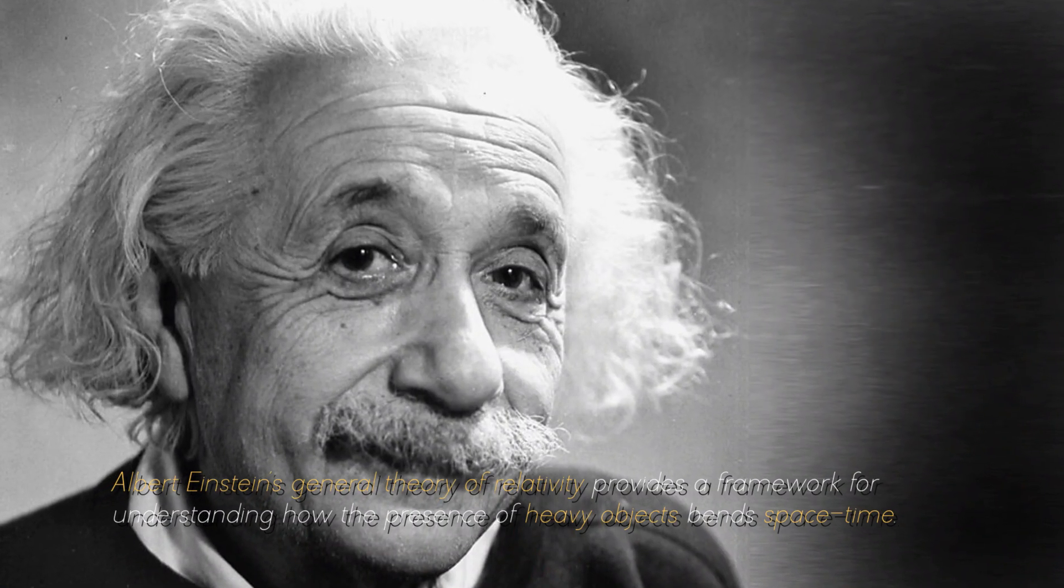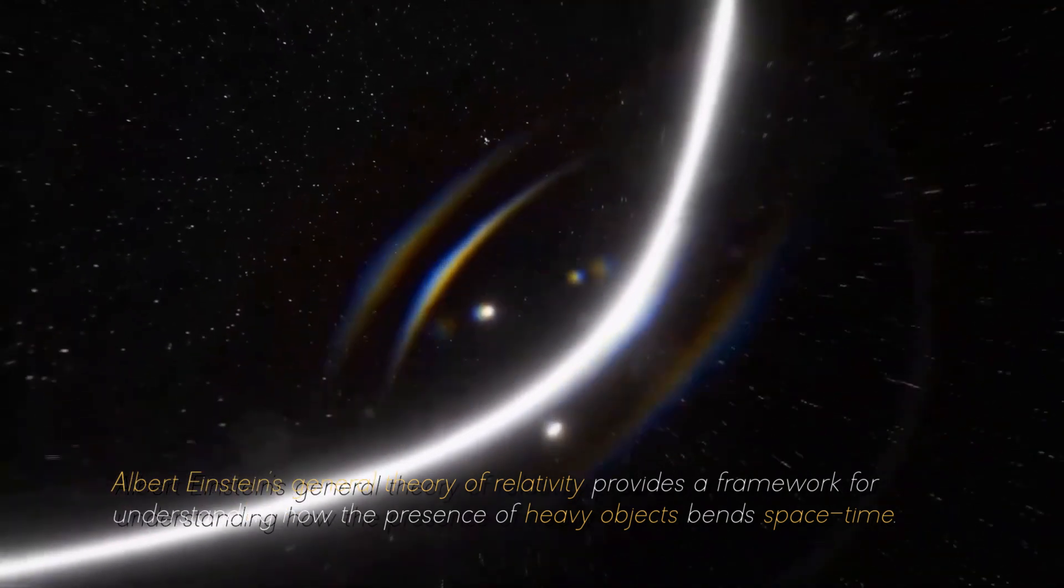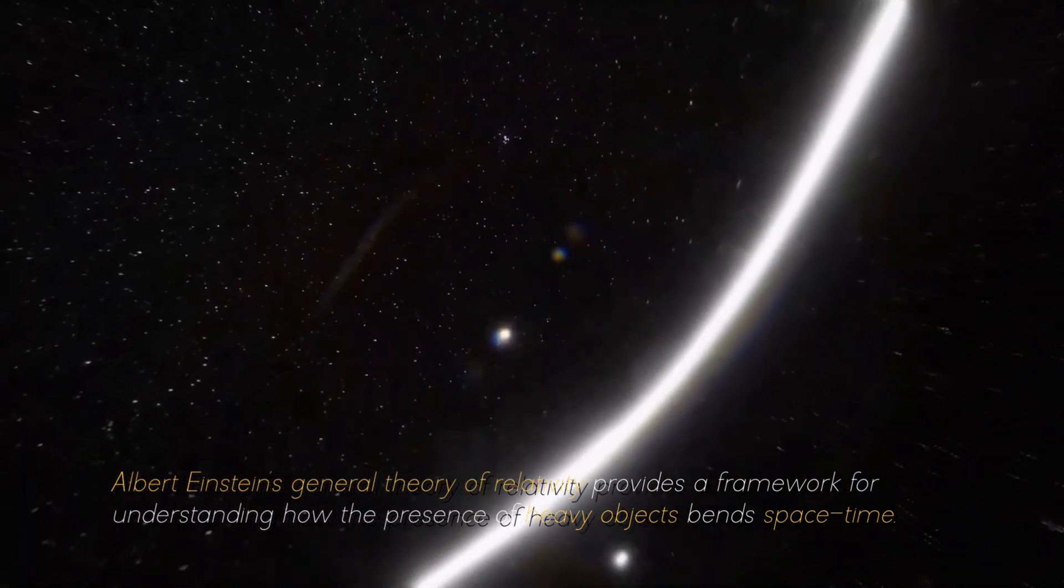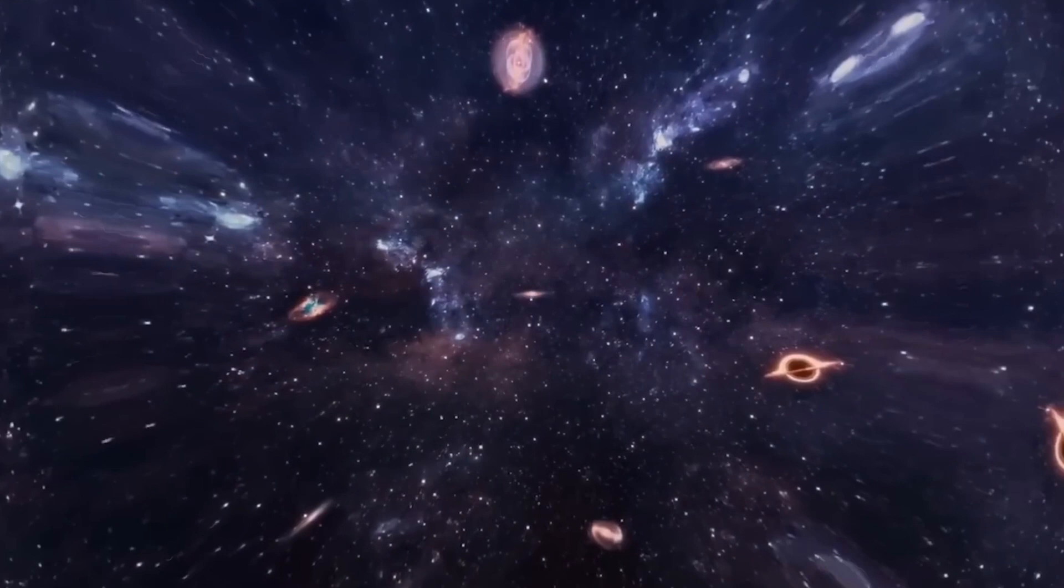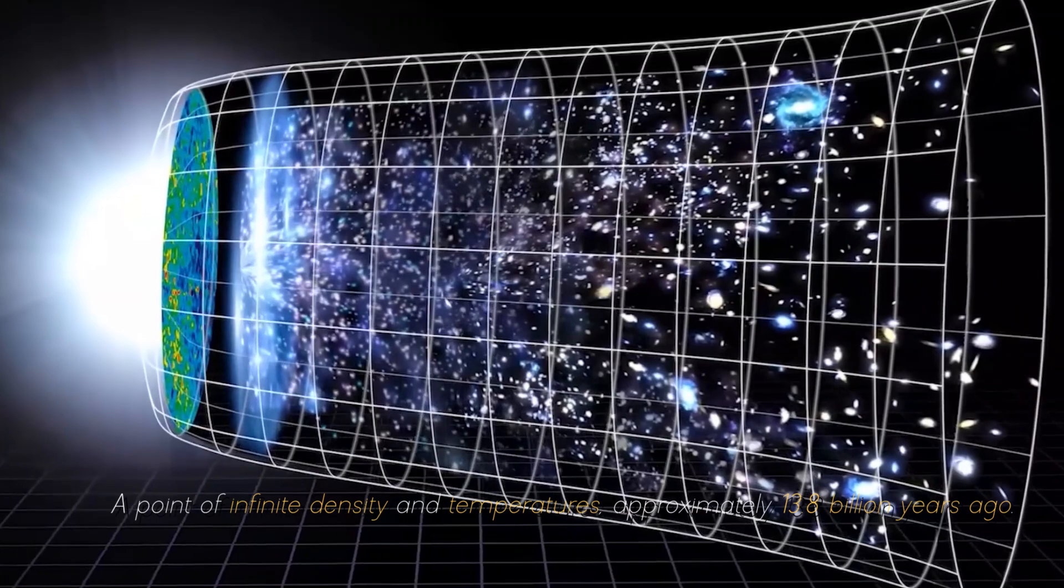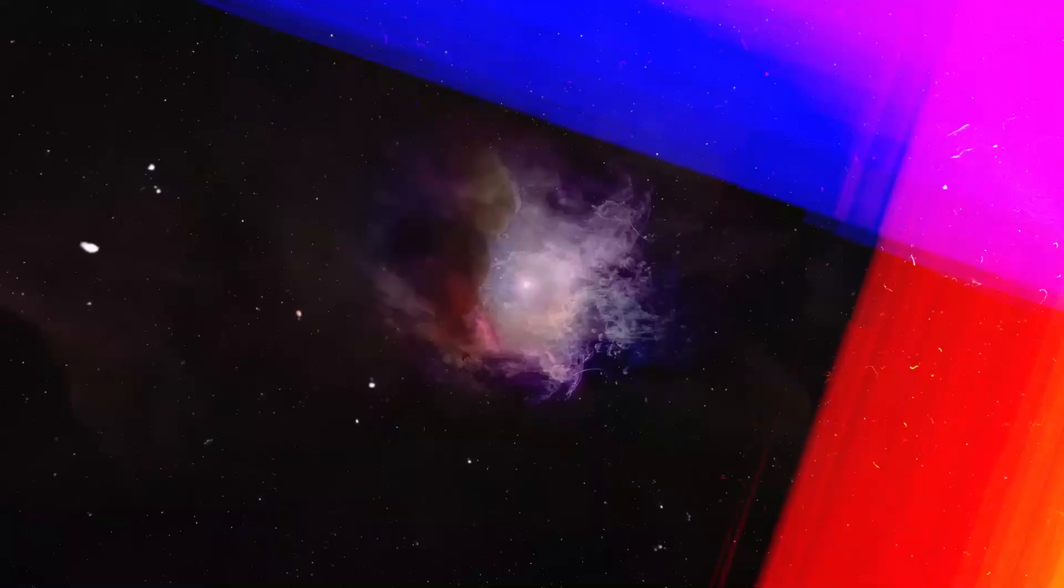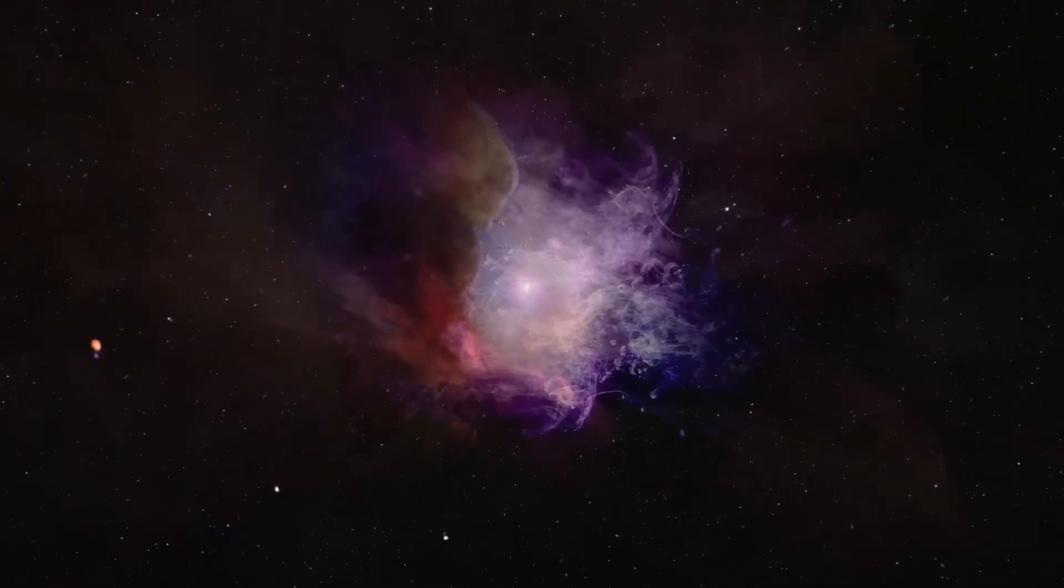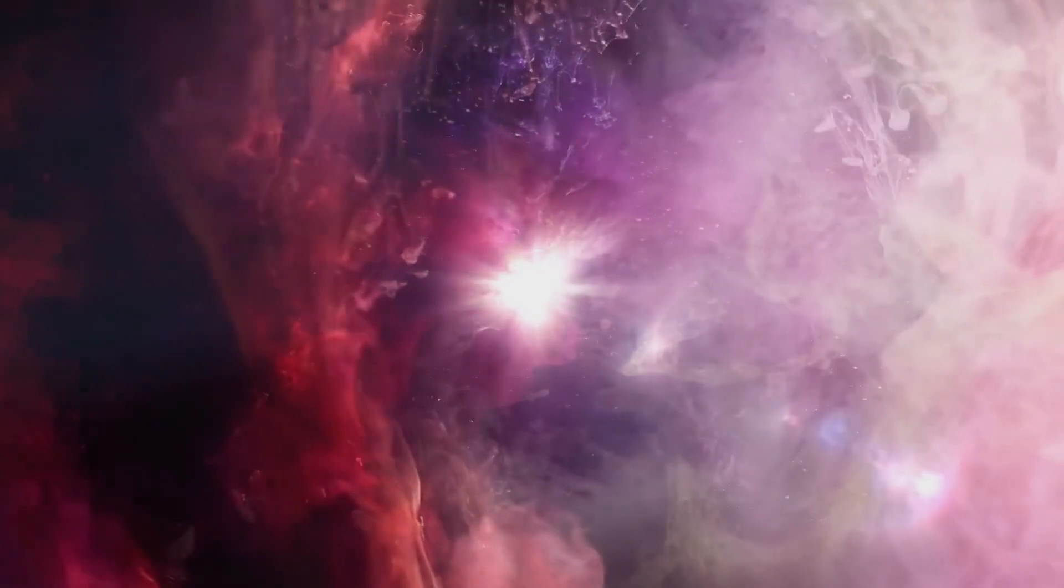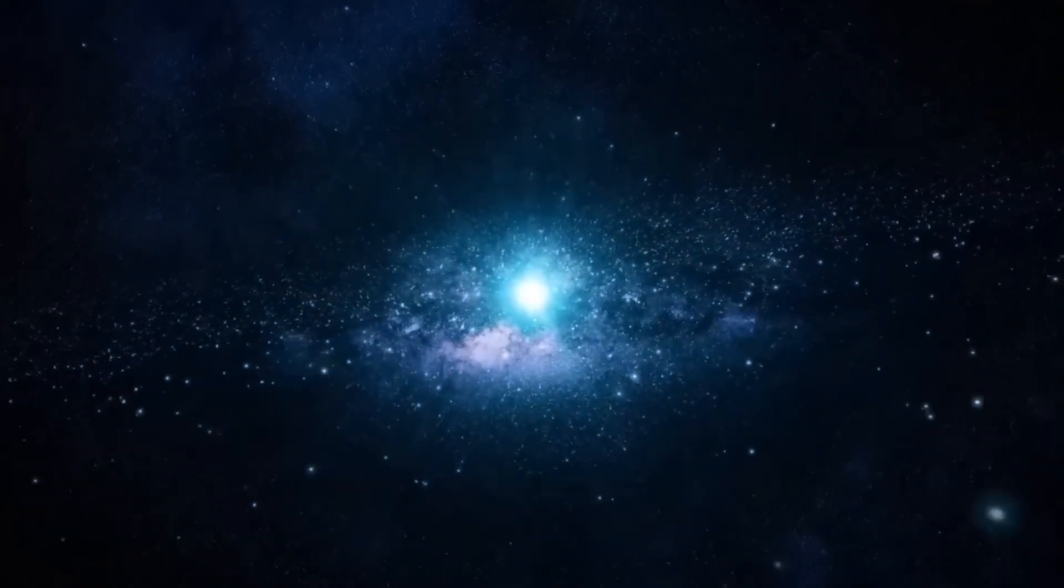Albert Einstein's general theory of relativity provides a framework for understanding how the presence of heavy objects bends space-time. According to this theory, the cosmos originated as a singularity, a point of infinite density and temperature approximately 13.8 billion years ago. All matter and energy were compressed into an extremely small, hot region. At this point, the cosmos began to expand with a rapid and violent event known as the Big Bang.